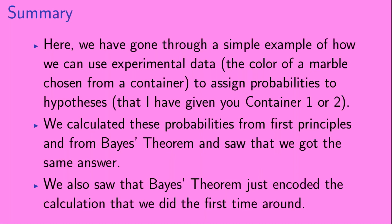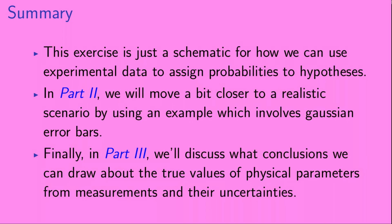Okay, so let's summarize. Here, we have gone through a simple example of how we can use experimental data — the color of a marble chosen from a container — to assign probabilities to hypotheses — that I have given you container 1 or container 2. We calculated these probabilities from first principles and from Bayes' Theorem, and saw that we got the same answer. We also saw that Bayes' Theorem just encoded the calculation we did the first time around. This exercise is just a schematic for how we can use experimental data to assign probabilities to hypotheses. In Part 2, we will move closer to a realistic scenario using an example with Gaussian error bars. And finally, in Part 3, we'll discuss what conclusions we can draw about the true values of physical parameters from measurements and their uncertainties.